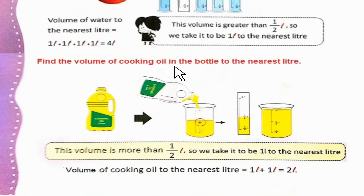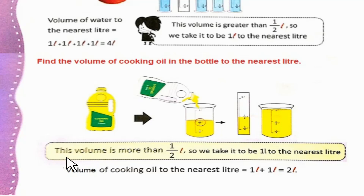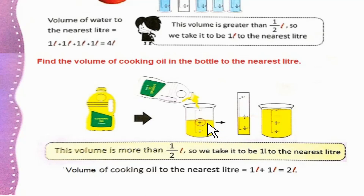Find the volume of cooking oil in the bottle to the nearest liter. जब हमने cooking oil beakers में डाला तो एक beaker जिसका volume 1 liter है वो full भर गया, और दूसरे beaker में oil 1/2 liter से थोड़ा ज्यादा है. This volume is more than 1/2 liter, so we take it to be 1 liter to the nearest liter. Total volume: 1 liter + 1 liter = 2 liters.